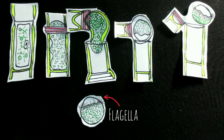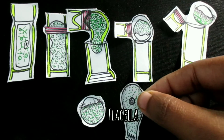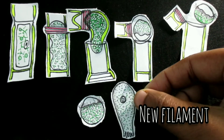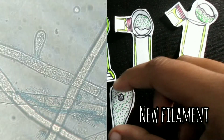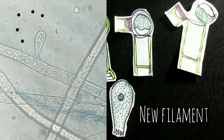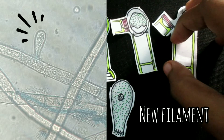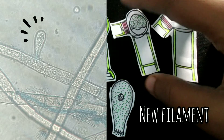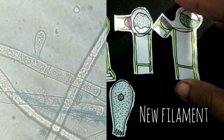Eventually the zoospore comes to rest, attaches itself by its colourless end, withdraws the flagella from the cell wall, and divides to form a new filament.